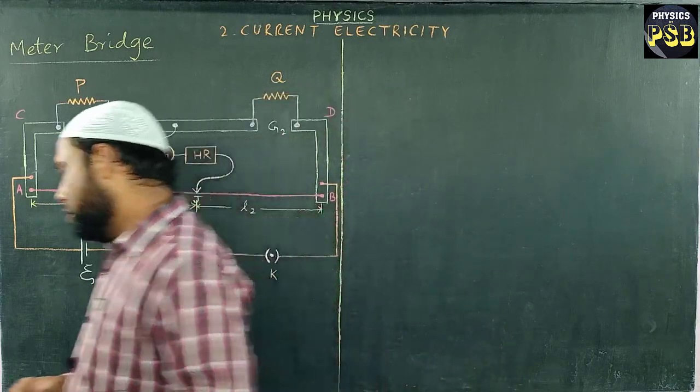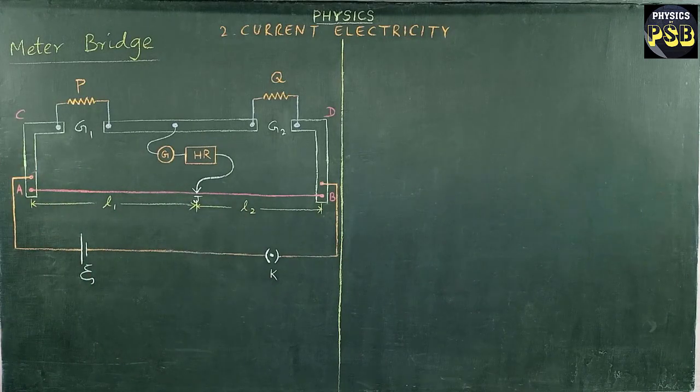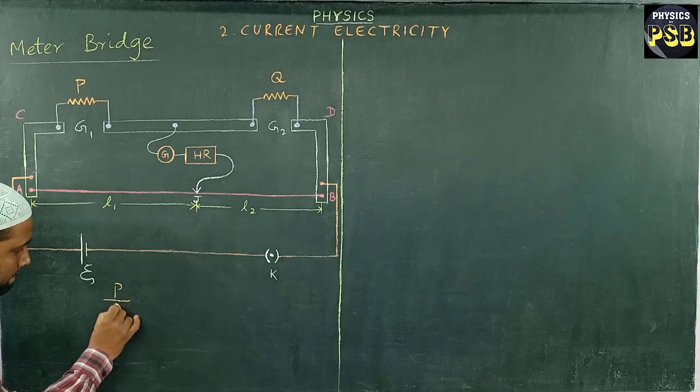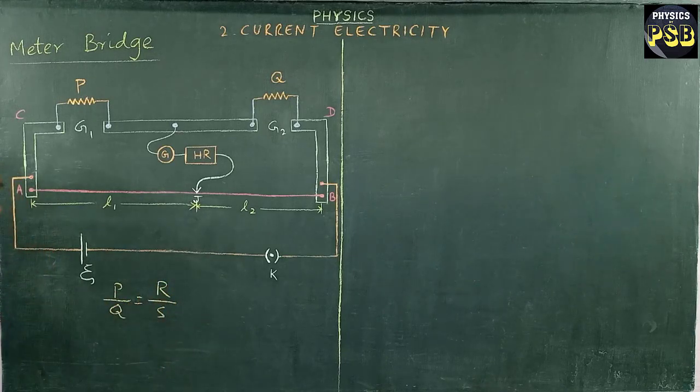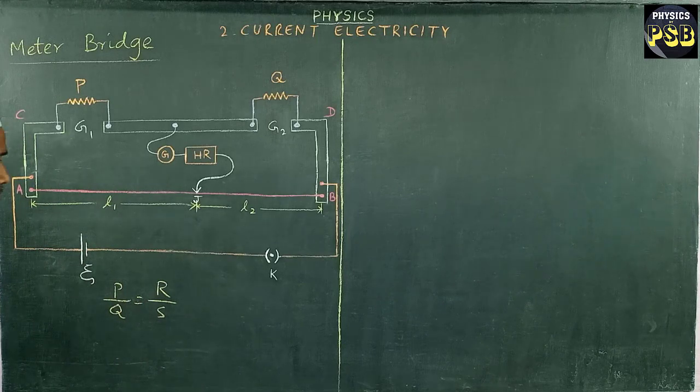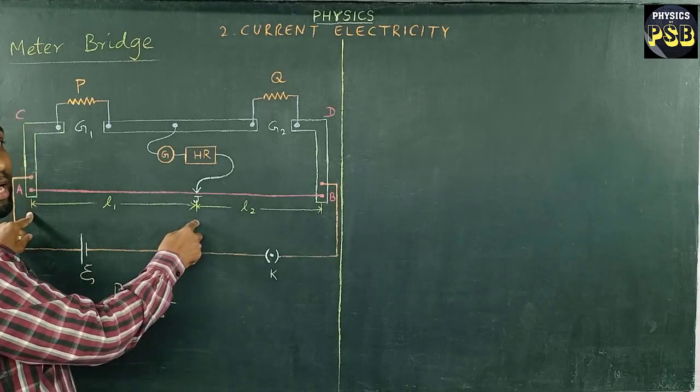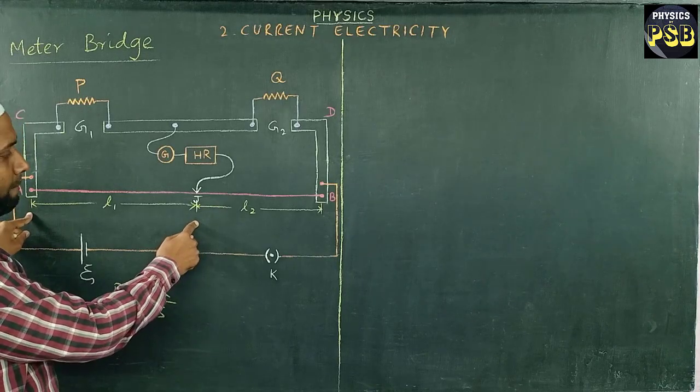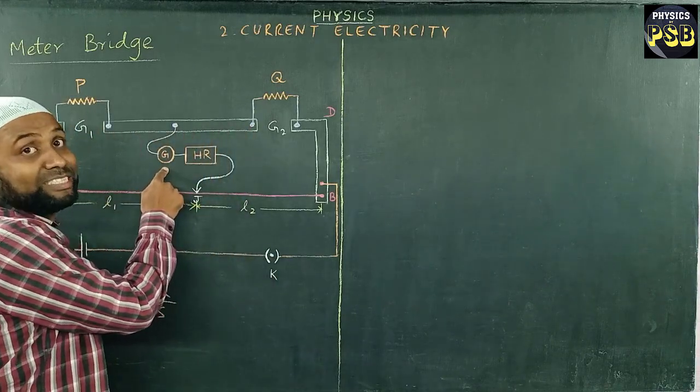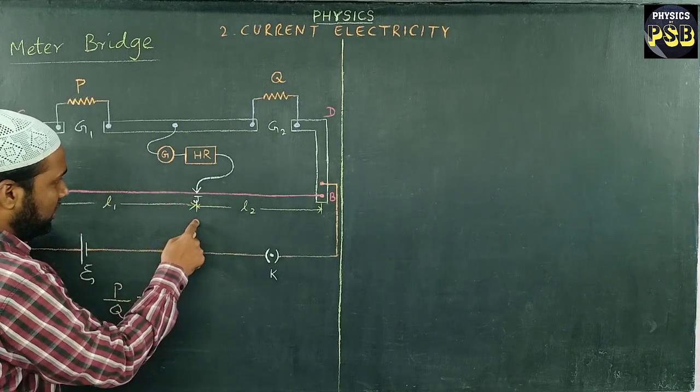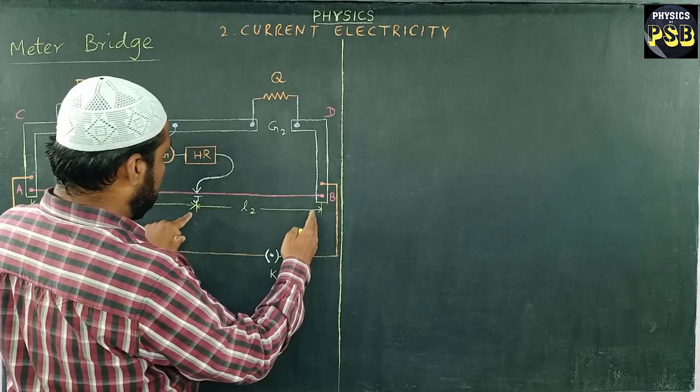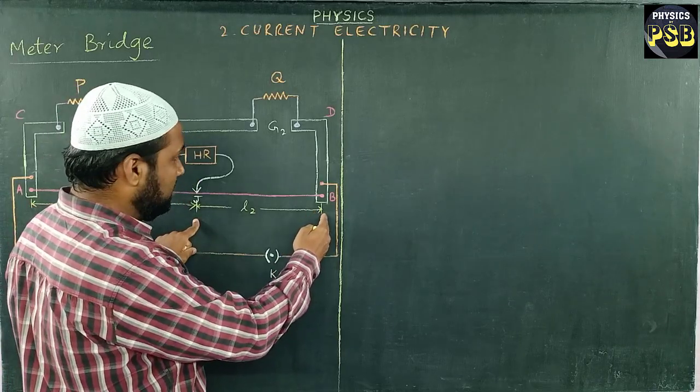We know the balance condition for a bridge is P upon Q equals R upon S. But in this expression we do not have R and S. R is replaced with the resistance of this part of wire. J is the point where the galvanometer shows zero deflection, that is null deflection. AJ has resistance replaced with R, and the remaining length of the wire is JB.